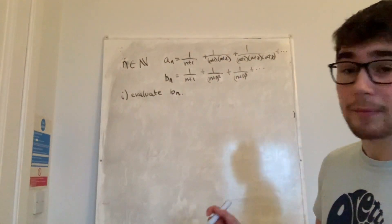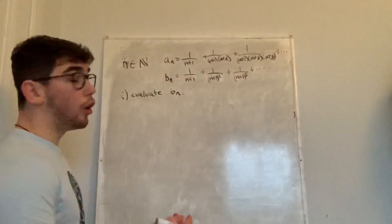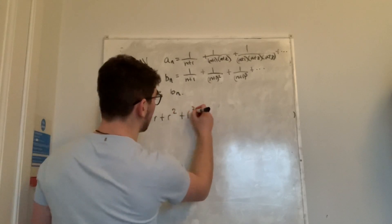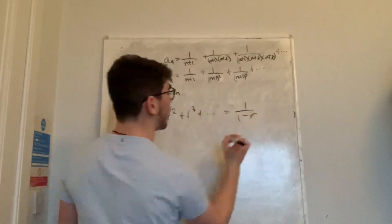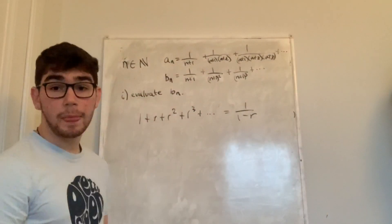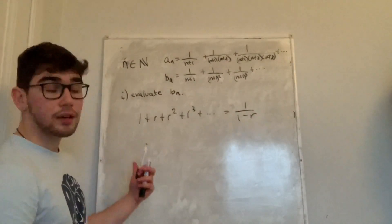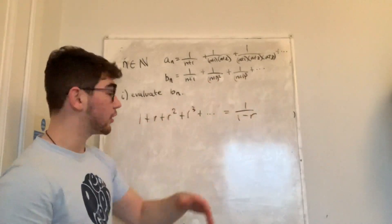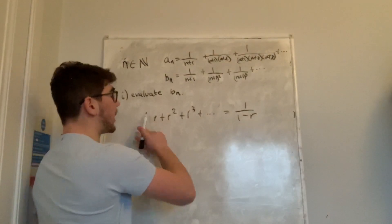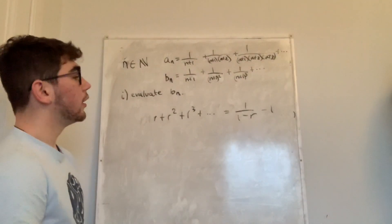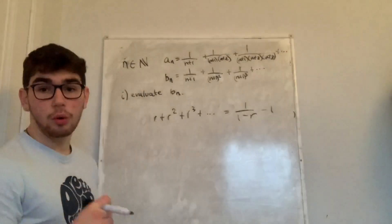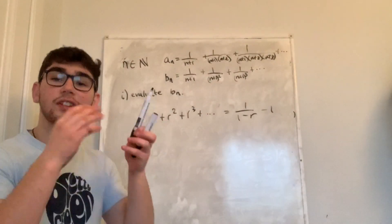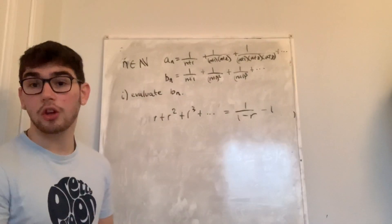Let's evaluate bₙ. bₙ looks very similar to a geometric series. Recall that 1 + r + r² + r³ + ⋯ = 1/(1−r) — that's the infinite geometric series formula. However, bₙ does not have a leading 1 term; it starts at 1/(n+1), then 1/(n+1)², then 1/(n+1)³, etc. So we subtract 1 from both sides, giving 1/(1−r) − 1. The ratio r for bₙ is 1/(n+1), since 1/(n+1)² = (1/(n+1))², and similarly for higher powers.